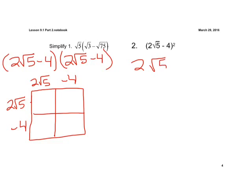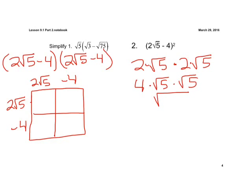We have 2 square root of 5 times 2 square root of 5. Really, all of these are being multiplied together. So if we want to switch around the order, we can do 2 times 2, which is 4. And then we have radical 5 times radical 5. Using our multiplication property, we know that's the same as the square root of 5 times 5, which is the square root of 25. We still have that times 4 out here, and we know the square root of 25 is 5. So in the end we get 4 times 5, which is 20. That's what we get in our first box.